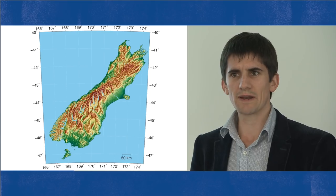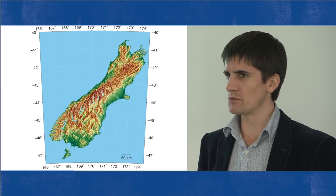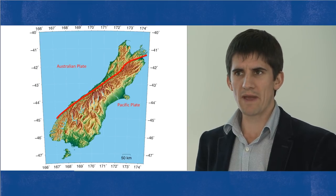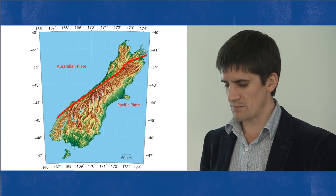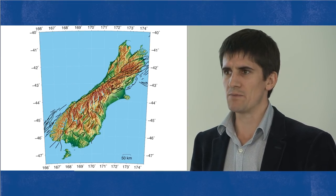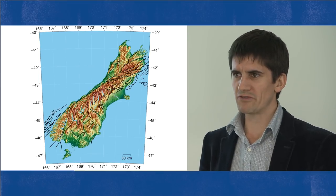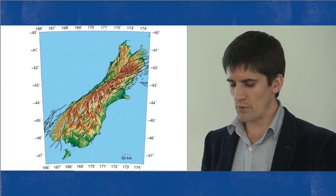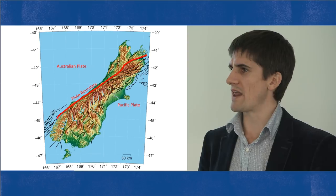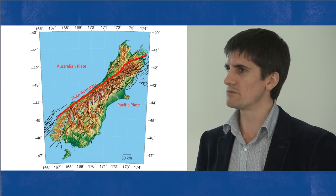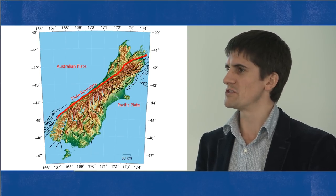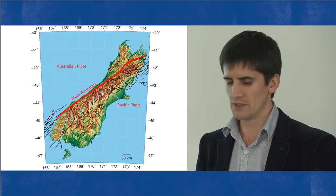One of the first things to understand is that the Alpine Fault is a major fault in New Zealand but represents one of many different possible earthquakes that we might have. We live on the boundary of the Australian and Pacific Plates and as a result of that complicated boundary we have many potential earthquakes. The next specific earthquake that causes us damage is not necessarily going to be exactly what we planned for in advance.